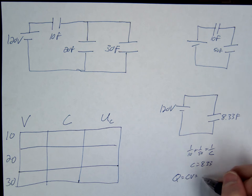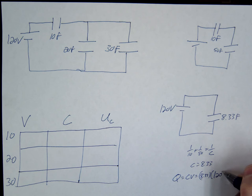So Q equals CV, 8.33 times 120. Q is 1000. So that's the total charge here, 1000.